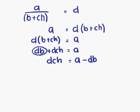So we had plus DB and that has now become minus DB. So we have DCH equals A minus DB.